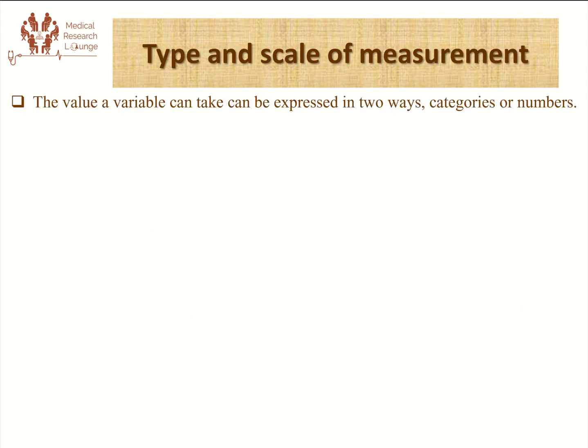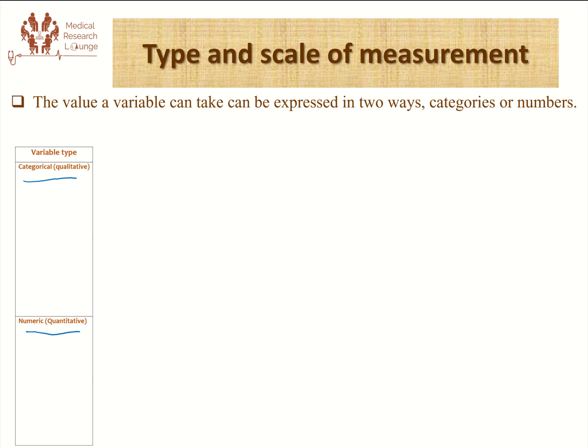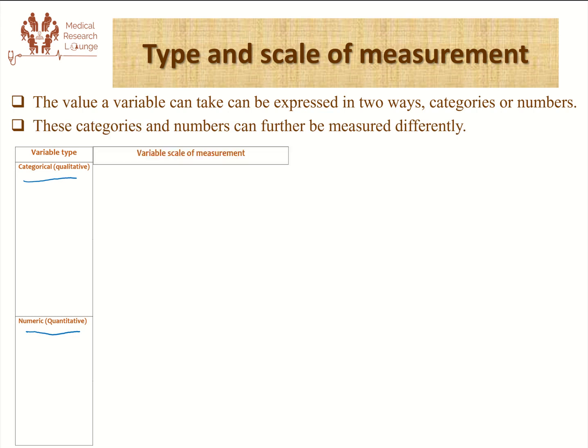The value our variable can take can be expressed in two general ways. The first is categorical or qualitative type of variable and the other is numeric or quantitative variable. When dealing with these types, we further classify them into different groups based on the scale of measurement they can assume.